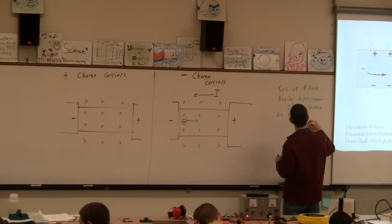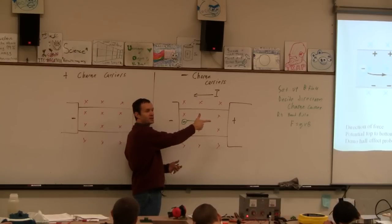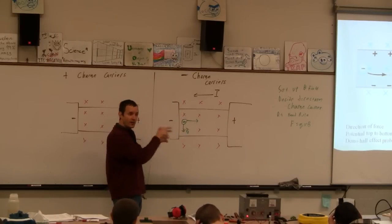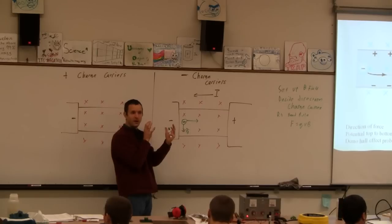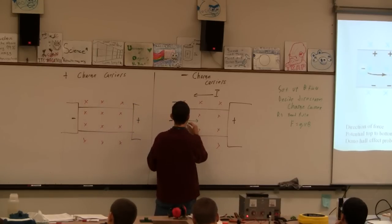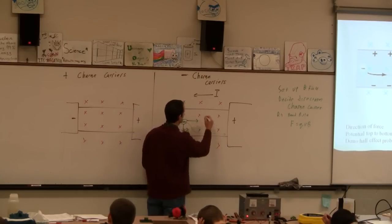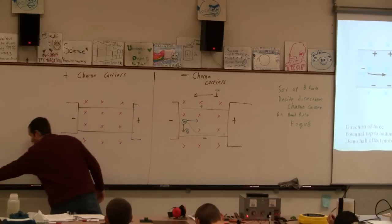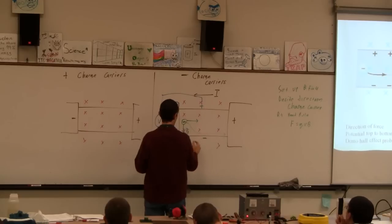The force is F = QVB. Magnetic field is into the page, force is up but it's a negative charge so the force is actually down. And so this electron, as it flows that way — Hall effect probes have to have their own little source of current — it's forced down, so the bottom of this wire actually drifts down and travels along the bottom of the wire, and the bottom of the wire becomes negative.